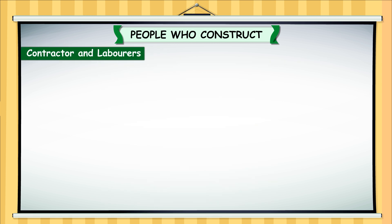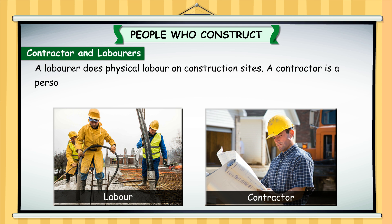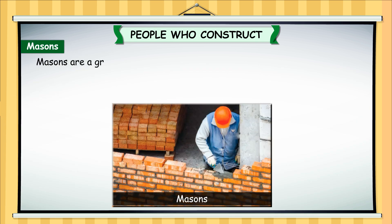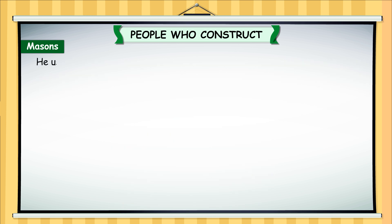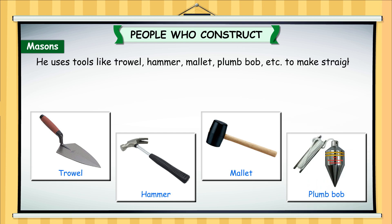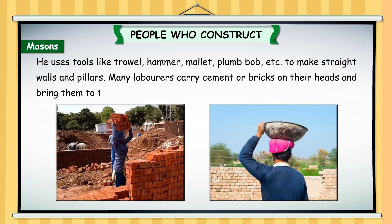A labourer does physical labour on construction sites. A contractor is a person who appoints labourers and supervises their work at the construction site. He also arranges the materials required for making the house. Masons are a group of professional people who construct the building using bricks and cement and set the foundation of the building. The mason lays the walls, roofs and pillars of the house. He uses tools like trowel, hammer, mallet, plumb bob, etc. to make straight walls and pillars. Many labourers carry cement or bricks on their heads and bring them to the mason for work.